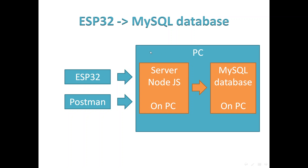Before we dive into the ESP-IDF environment, we will check that the server is running correctly by using Postman. In Postman we will generate a REST POST command which will send data to the server, and in this way we can verify that the server is working correctly. After that, we will check the connection between the server and MySQL, and then send the data from the ESP to the middleware and on to the MySQL database.